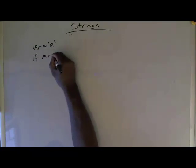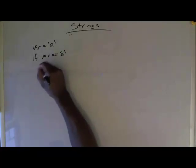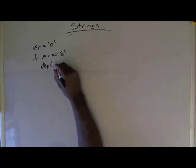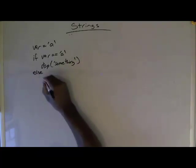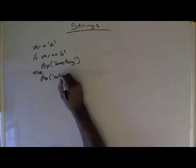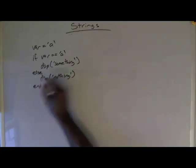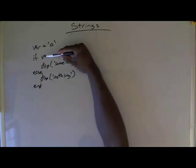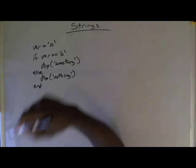If I define variable var equals character A, then I can say if var equals A, then I'm going to display something, else display nothing. And then that's simply just doing a test, does var equals A, and in this case it does, and so therefore we'll display something.